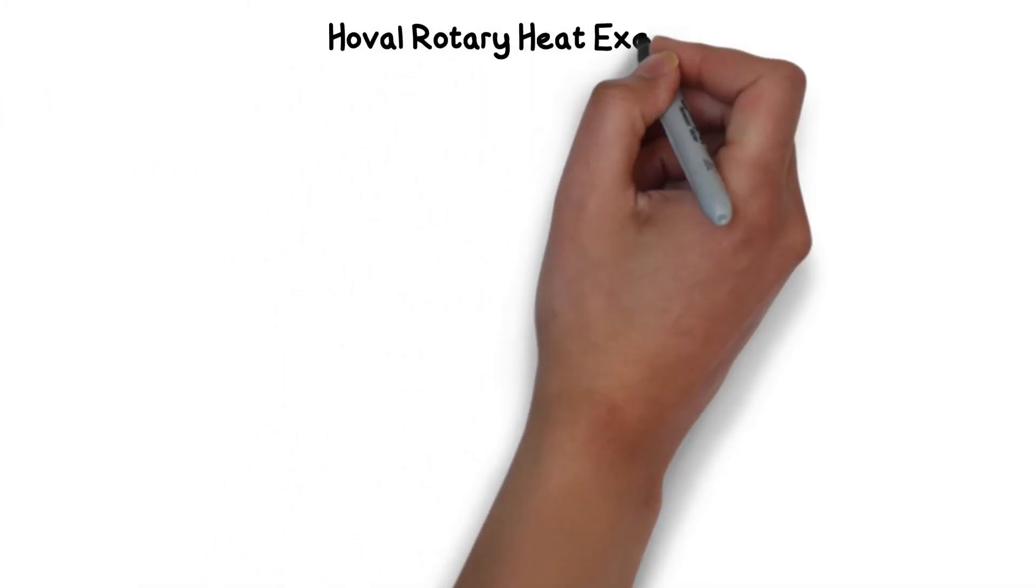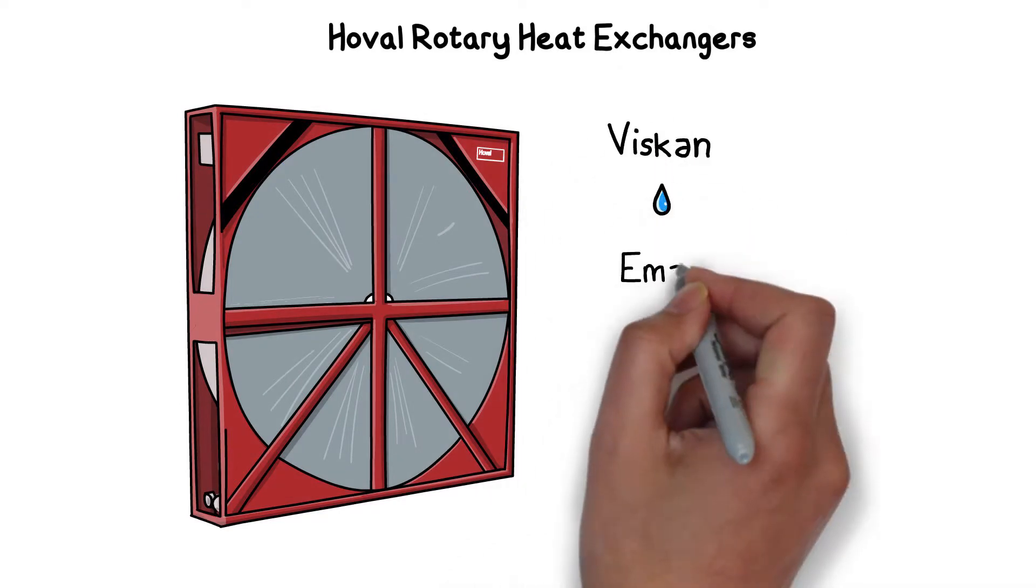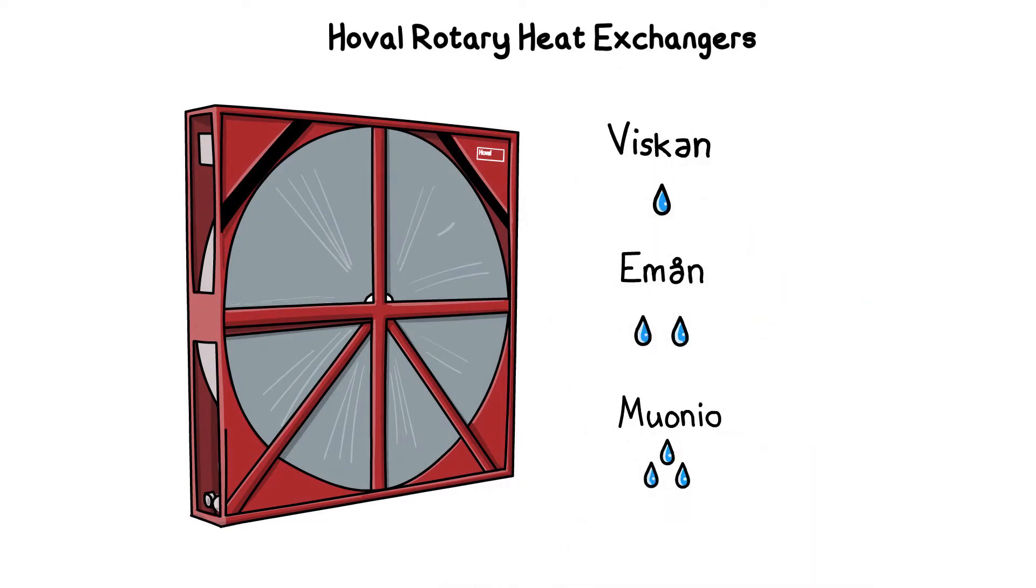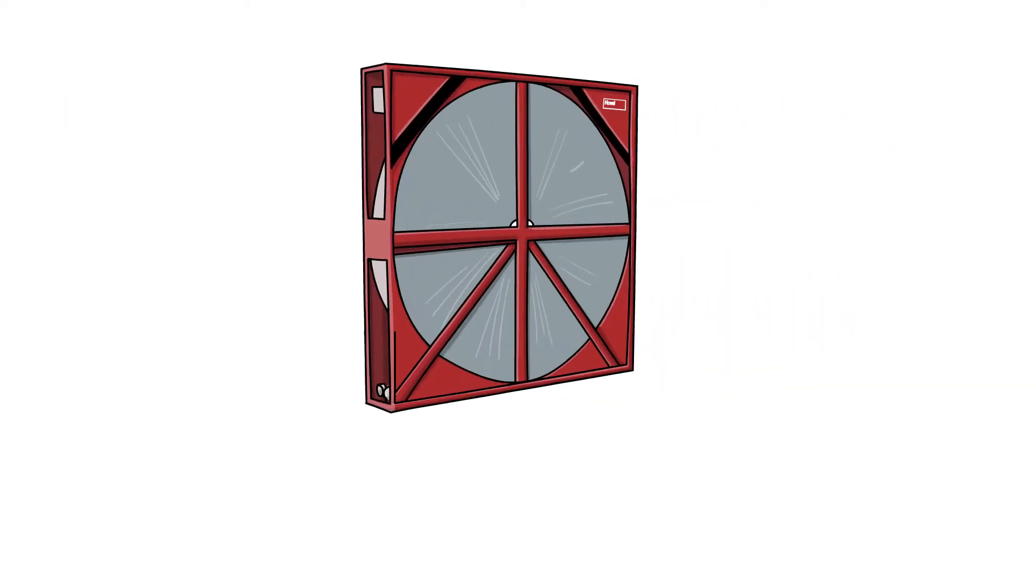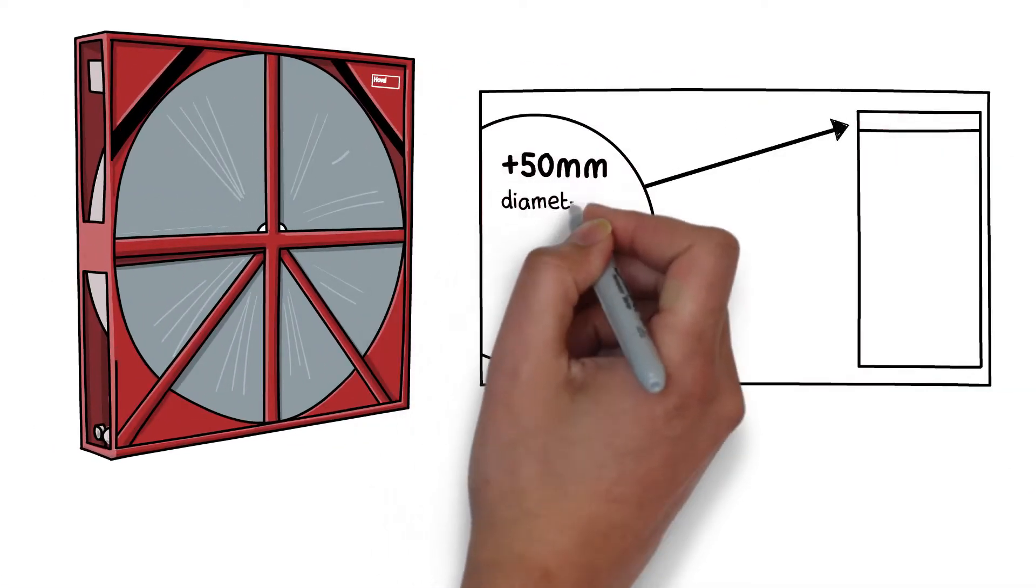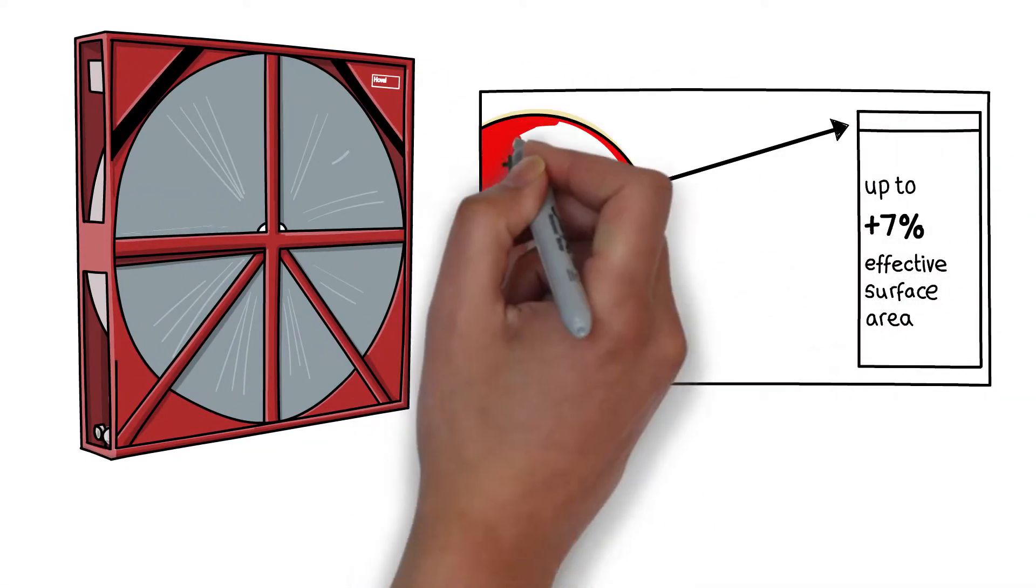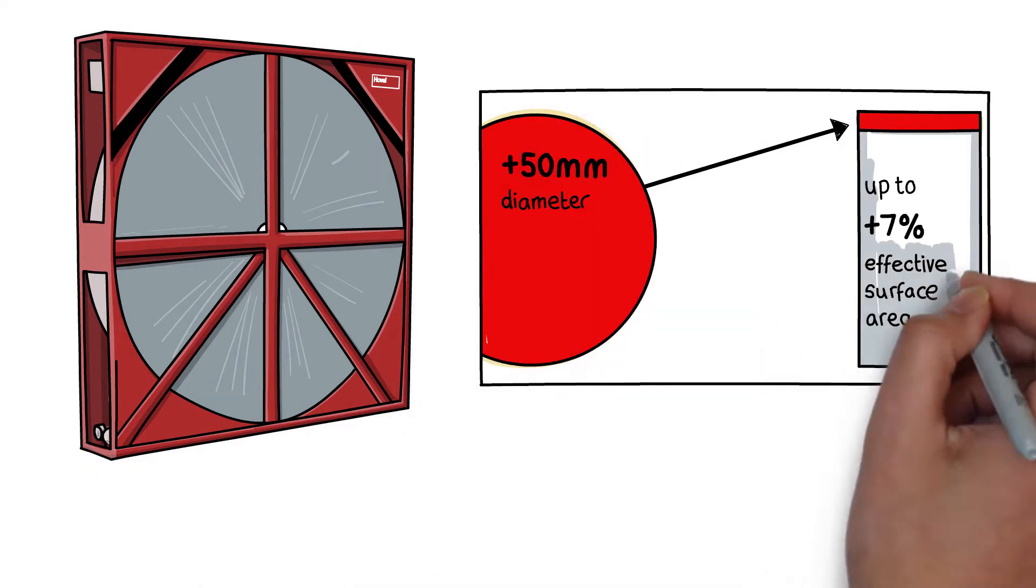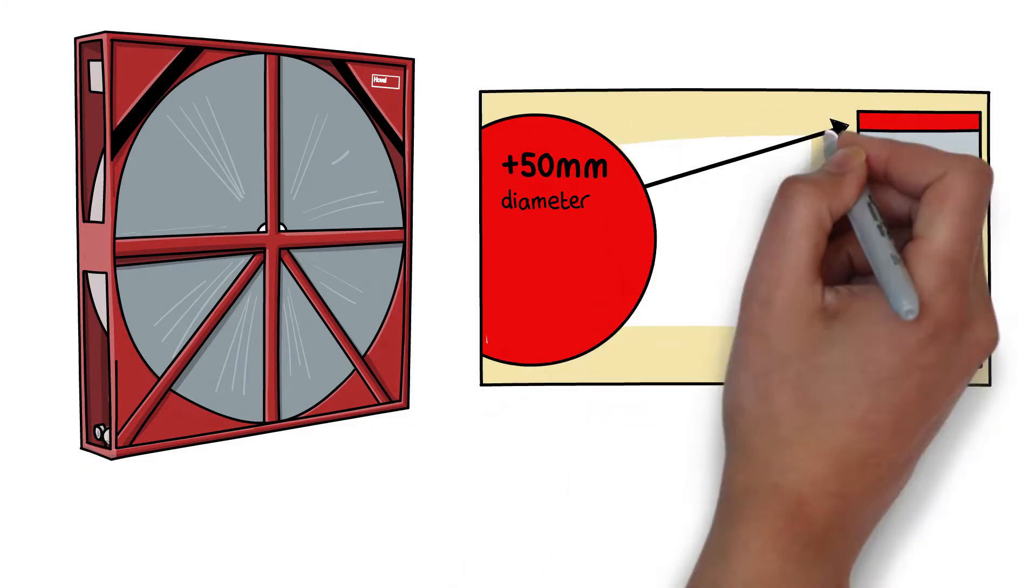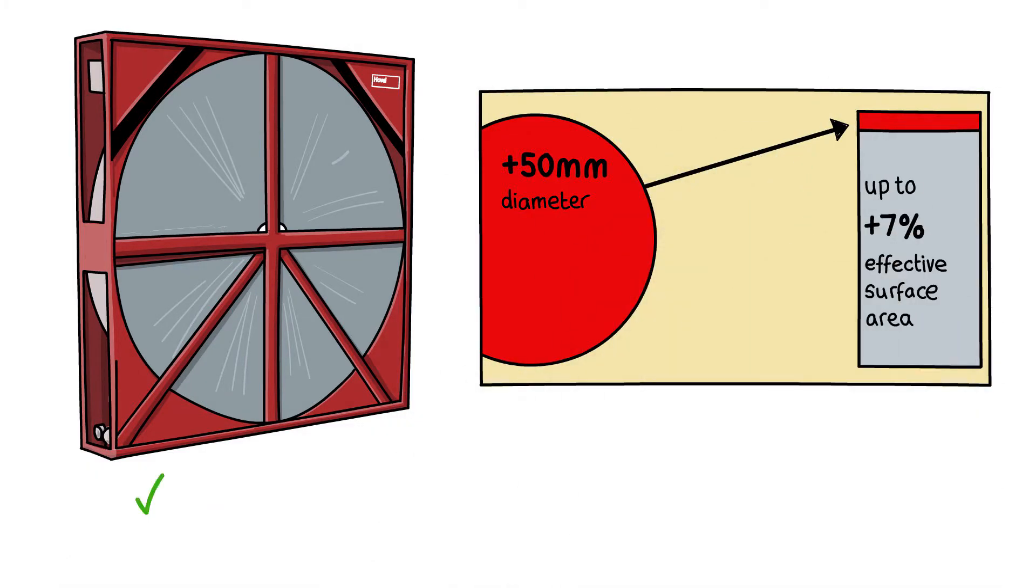HOVIL has created a range of solutions that provides all-round optimal efficiency and minimal pressure drop. To optimize storage mass, HOVIL rotary heat exchangers are housed in space-saving casings which allow for up to 7% more effective surface area. This enables higher efficiency while keeping the external dimensions of the housing the same whilst minimizing pressure loss.